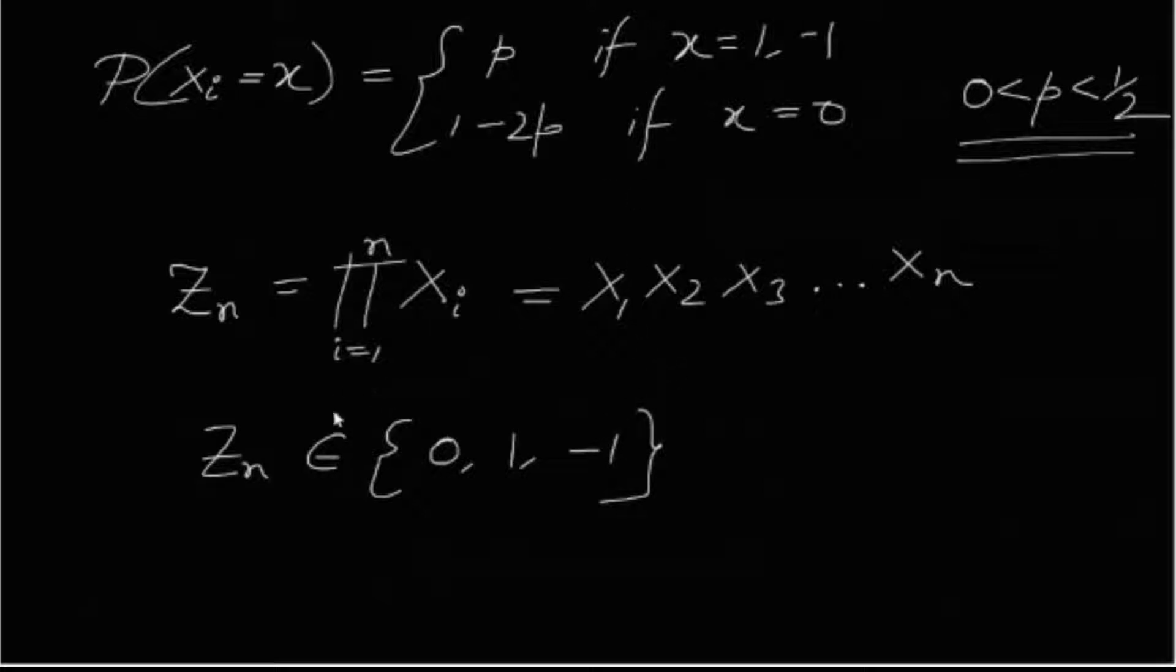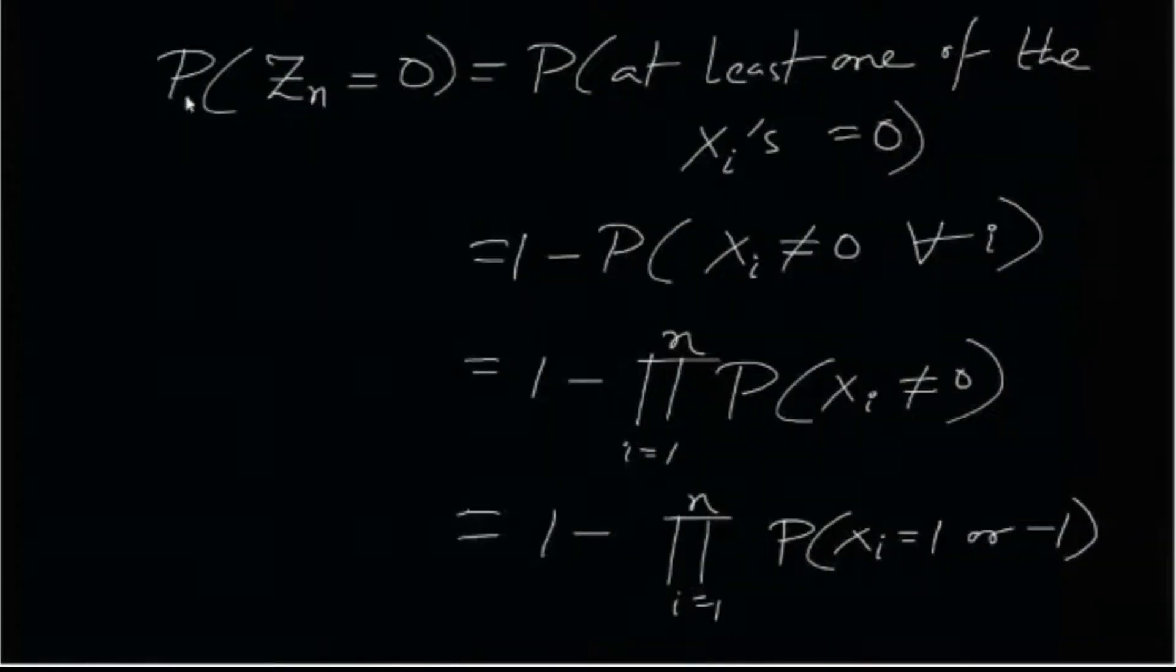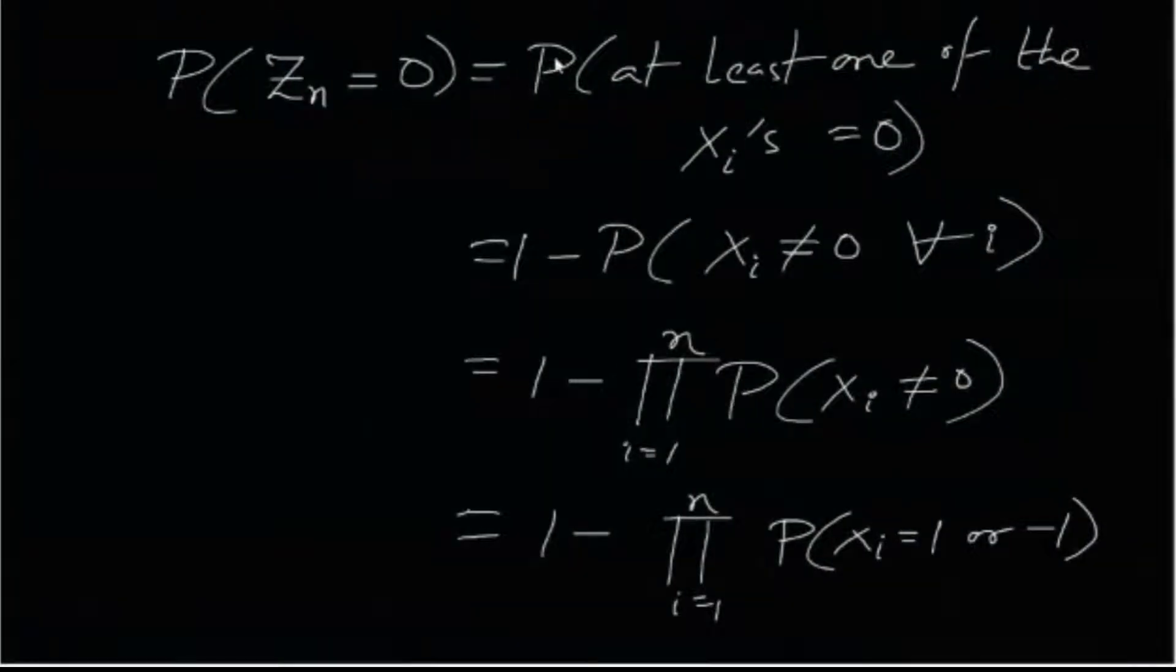So all you have to do is basically find out the pmf of the random variable zn. Now probability zn equals to 0 is basically probability at least one of the xi's is equals to 0.